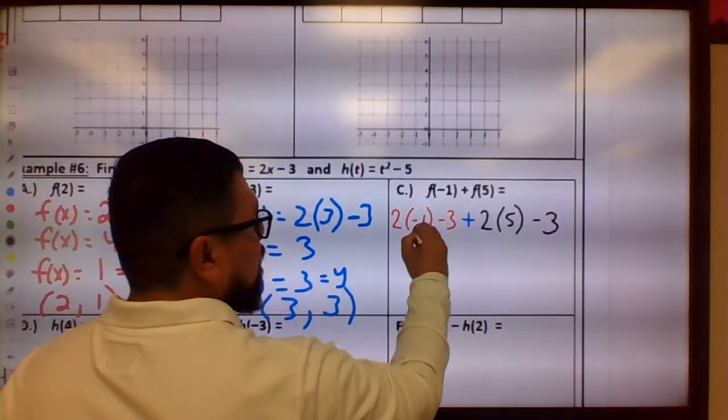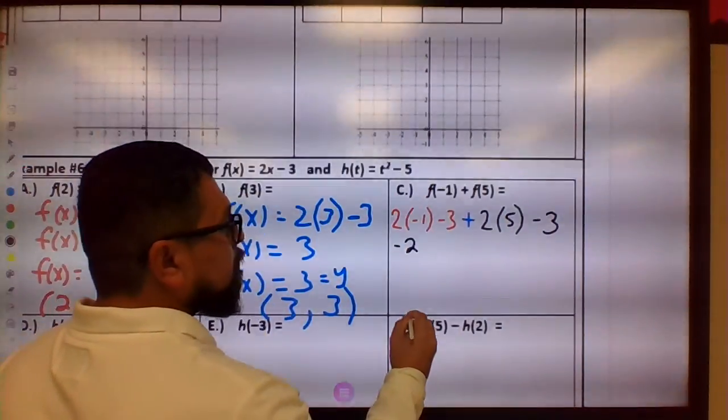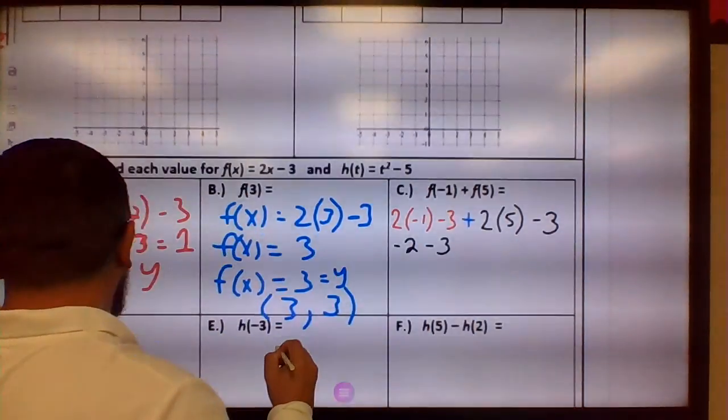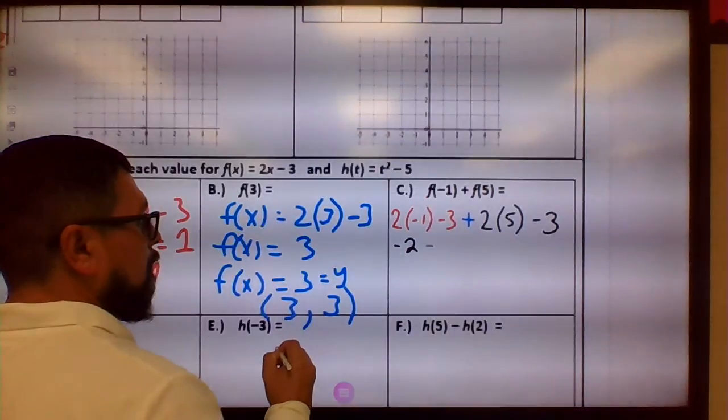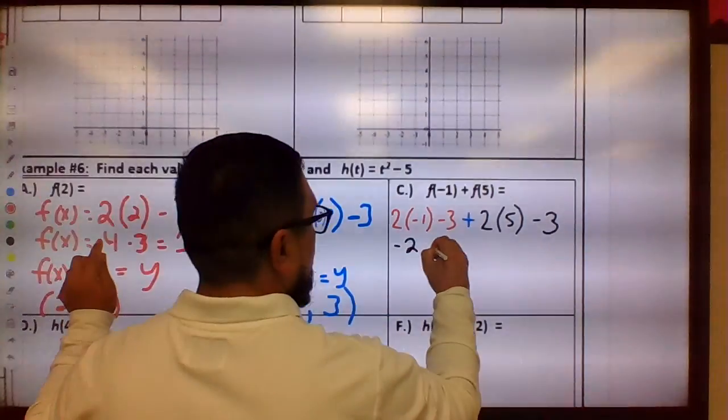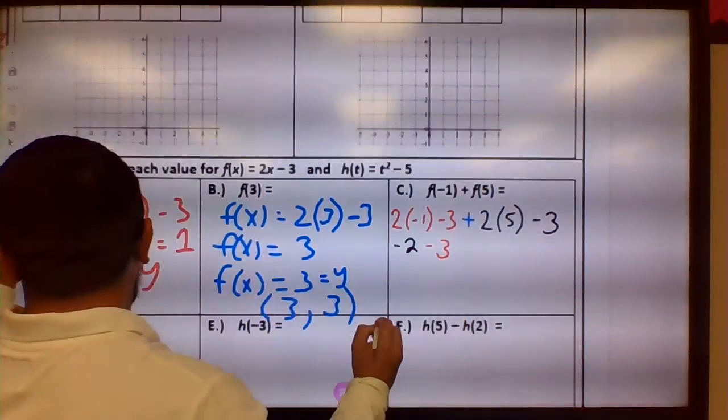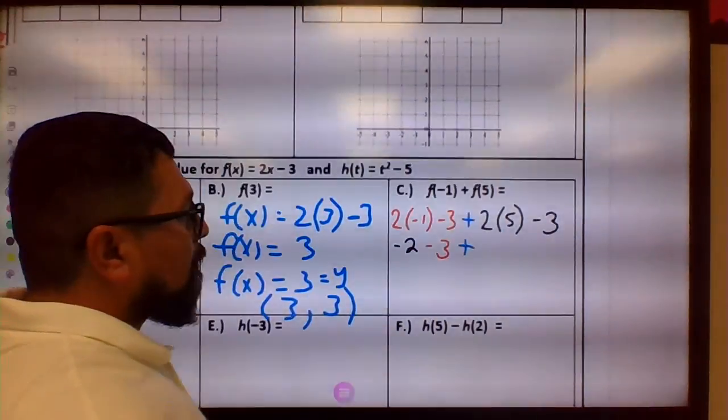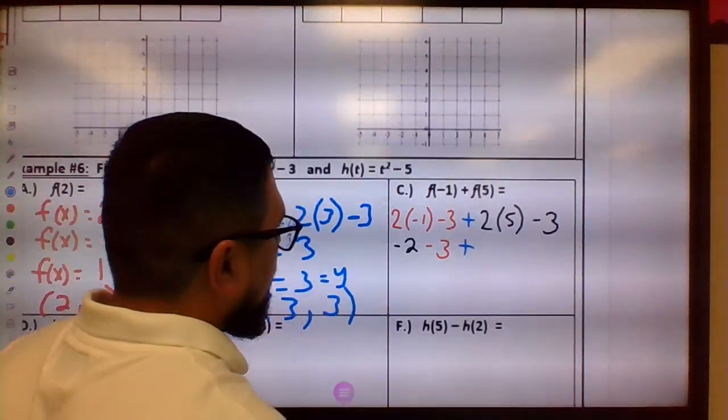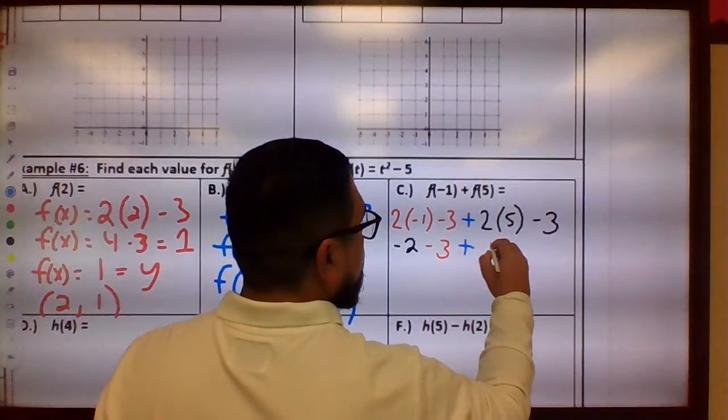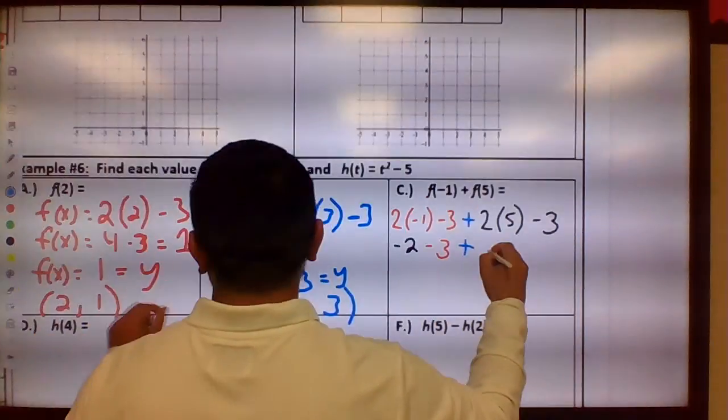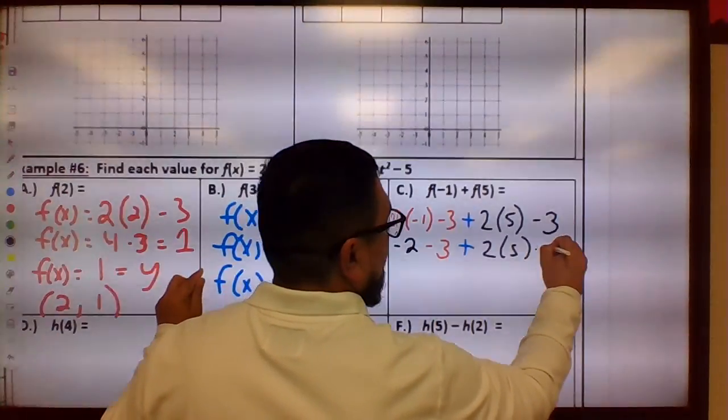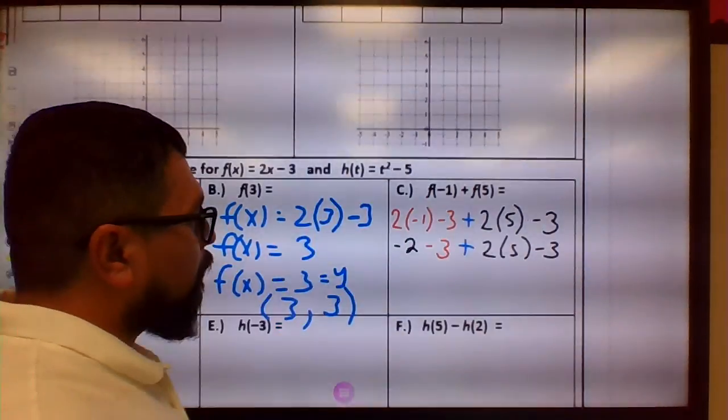So 2 times negative 1 is negative 2, so we bring this down, minus 3, plus, and then 2 times 5, or actually let's just leave it like that, 2, 5, minus 3. We did this one first.